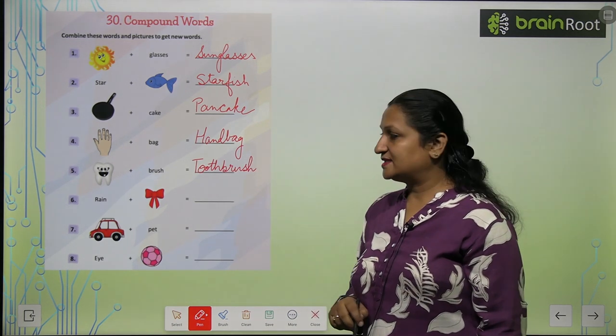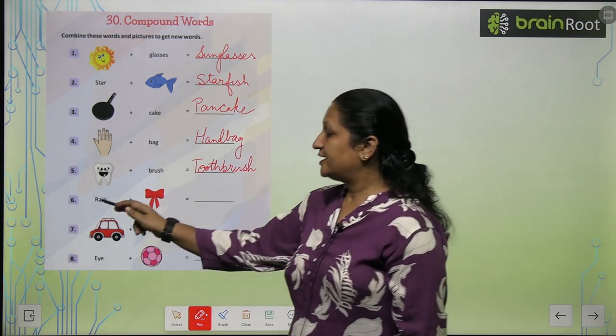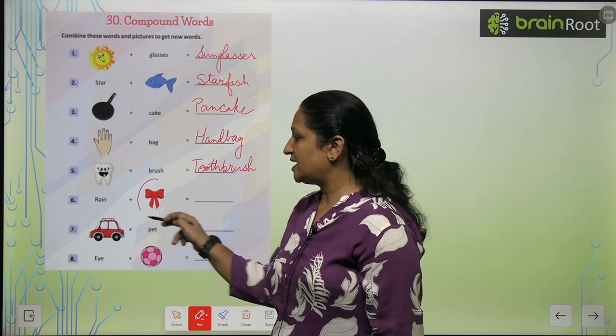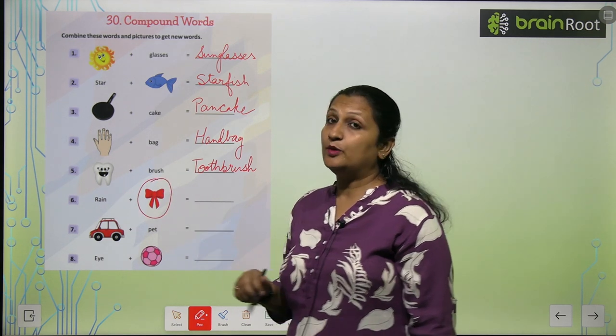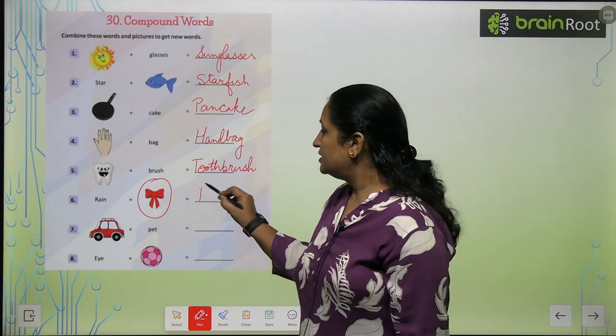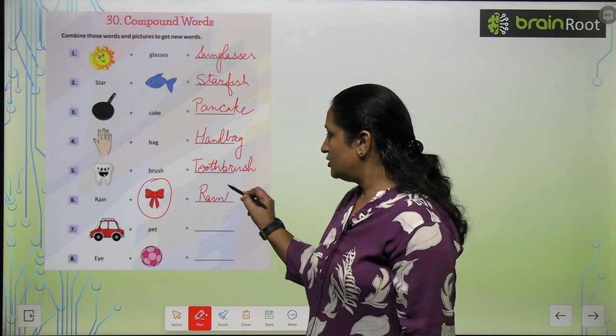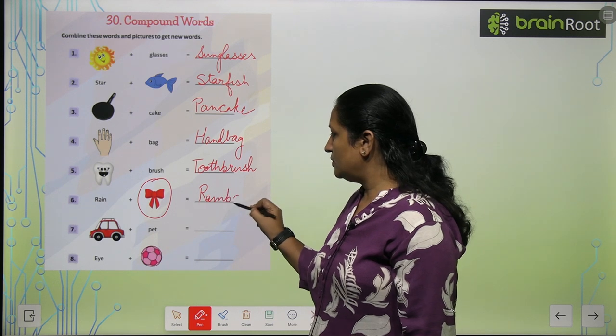Next one says rain plus — aur yeh kiski picture hai? Yeh hai ek bow. So yeh ban gya rainbow.